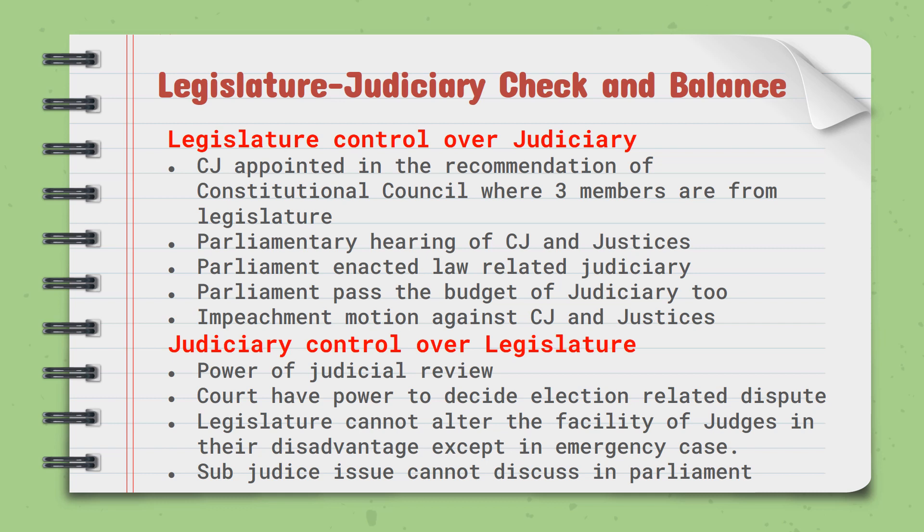Likewise, the judiciary also has control over the legislature. The judiciary has the power of judicial review of laws enacted by parliament. Courts have the power to decide election-related disputes. The legislature cannot alter the facilities of judges to their disadvantage. Except in emergency cases, sub-judice issues cannot be discussed in parliament. In this way, the judiciary also has control over the legislature.